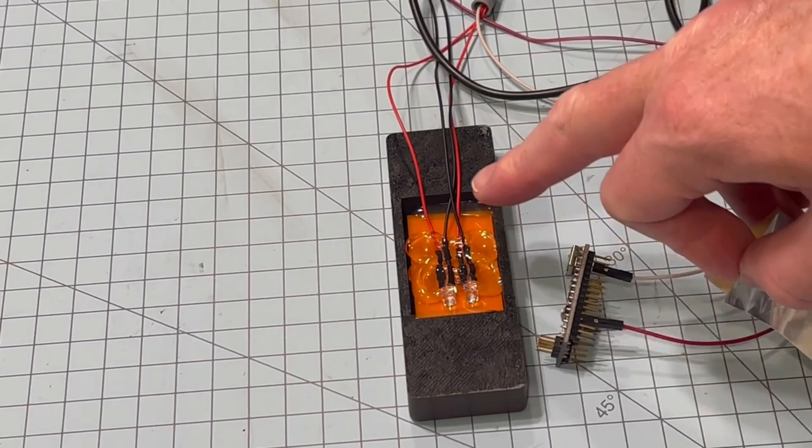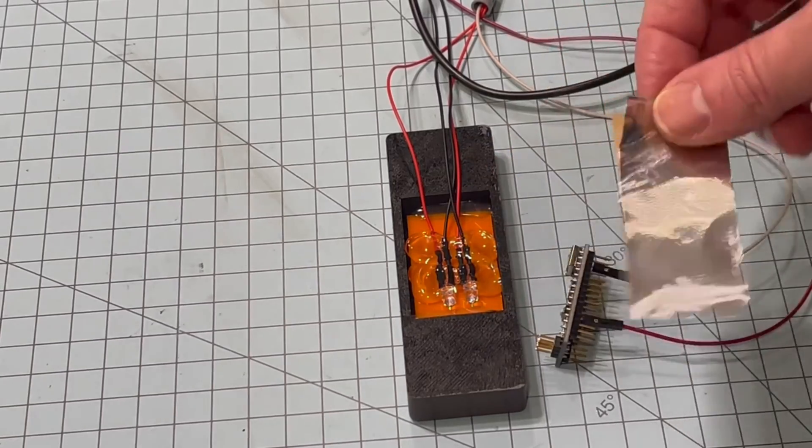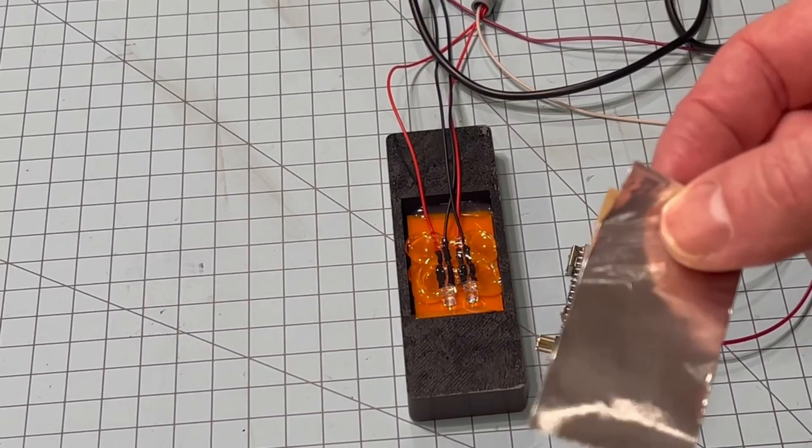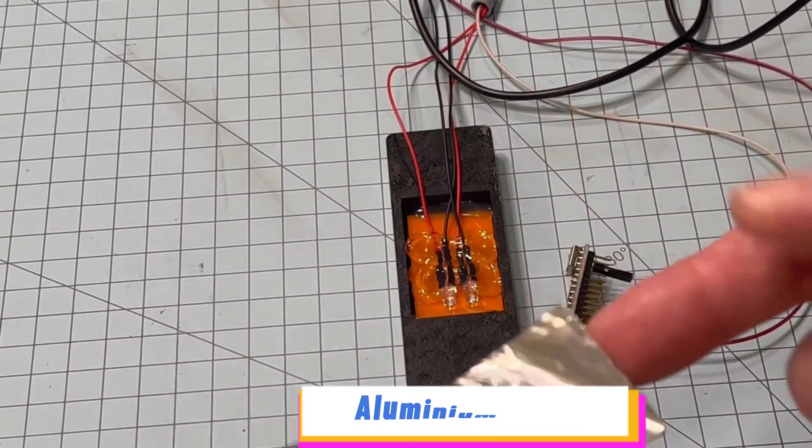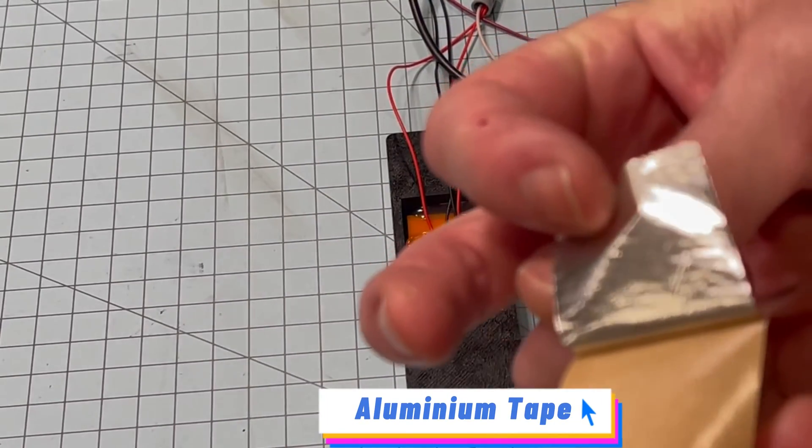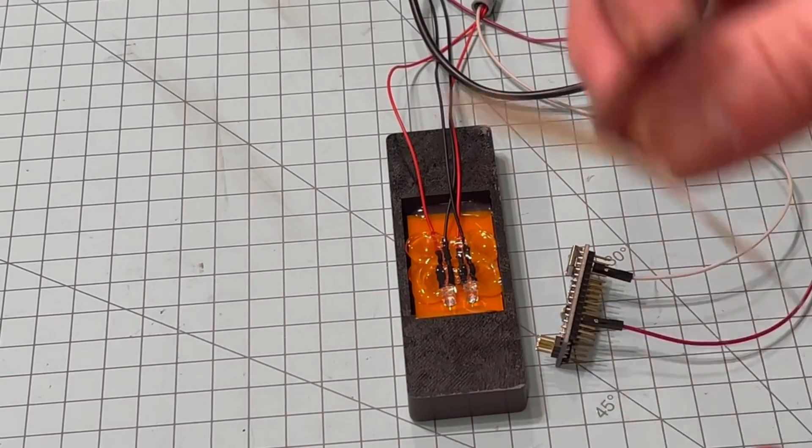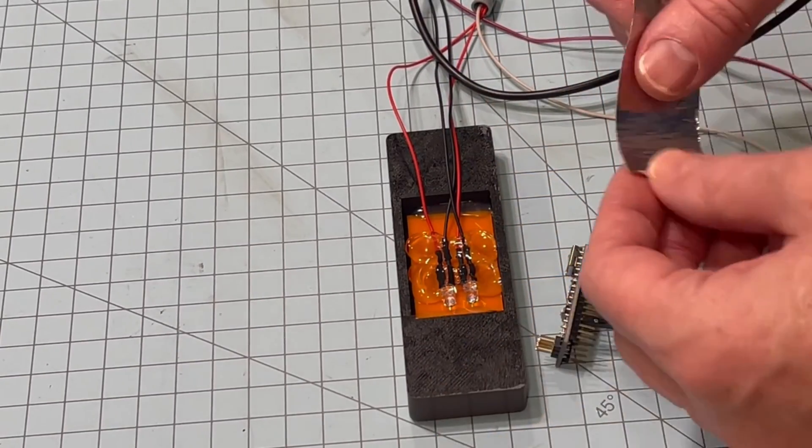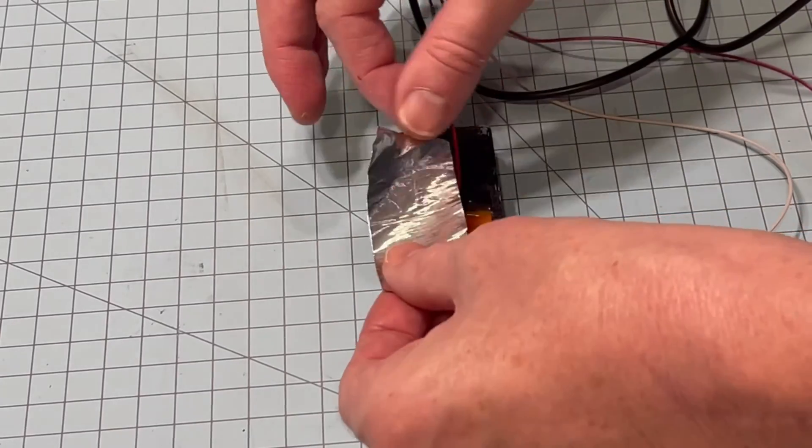We have our LEDs glued to the orange acrylic with hot glue, and I highly recommend if you want more light out of your LEDs, get some aluminum tape. It's reflective on both sides which makes the LEDs even brighter. So we're going to take this off here, put it over our LEDs.